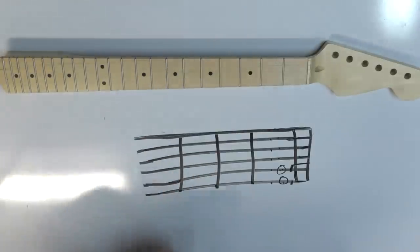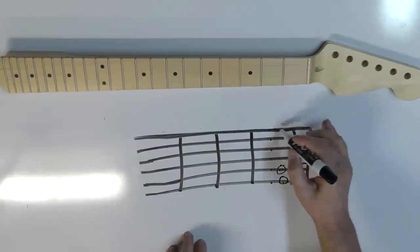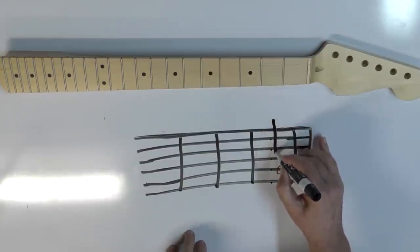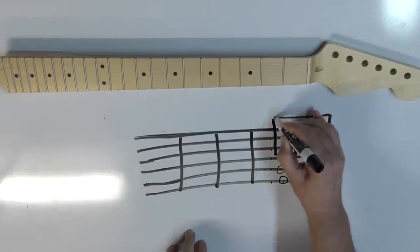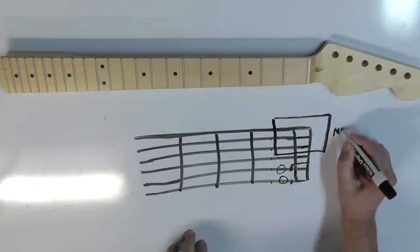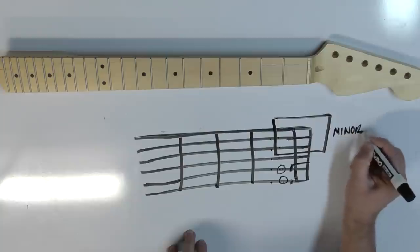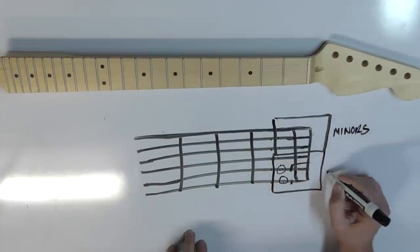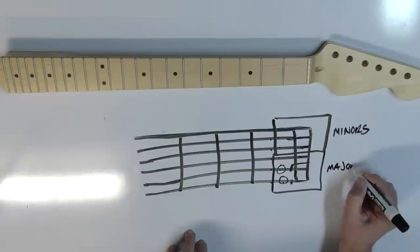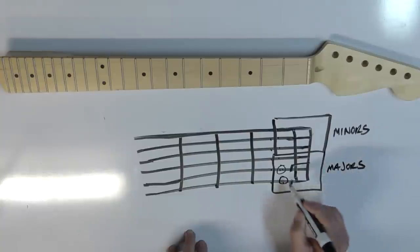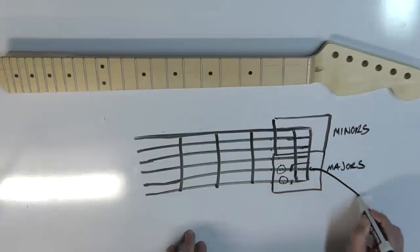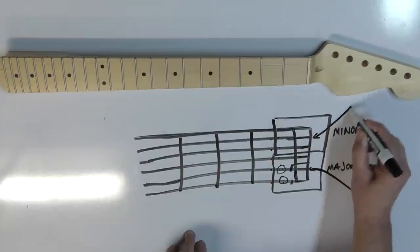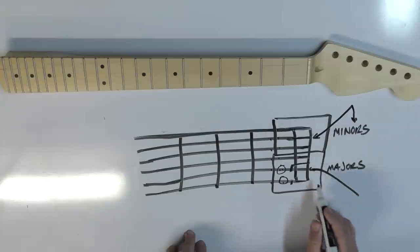Now, what I want you to do is I want you to think of the first top three strings. These guys right here, these are minors. These strings right here, these are majors. Remember home base? Home base is here, home base is here, but home base is only here for the minors, and I'll explain that here in a second.